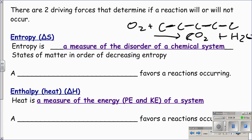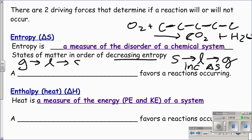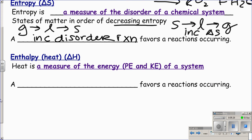We can easily see disorder by looking at states of matter: solids are chilling, liquids are flowing, and gases are crazy. Going from solid to liquid to gas increases entropy. Decreasing entropy would be going from gas to liquid to solid. A reaction that increases disorder favors a reaction occurring — that's the delta S side of things.